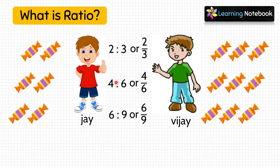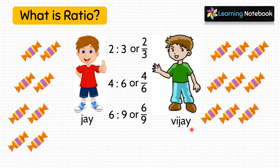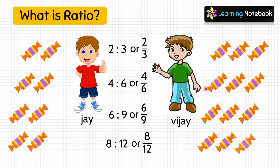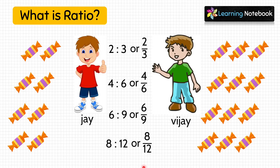Now, students, if I say on the 4th day Jai has 8 chocolates, then Vijay will have how many chocolates? Yes, 12 chocolates, because their chocolates are always in the ratio of 2 is to 3. So students, do remember that ratio will not tell you the exact quantity, but ratio is the comparison or relationship of quantities.